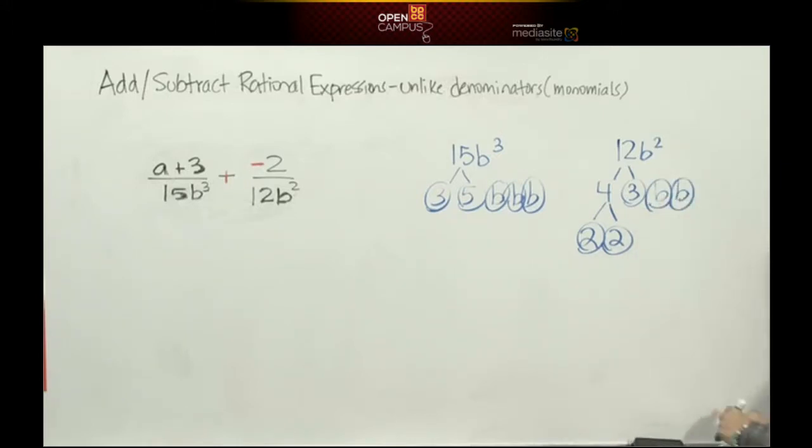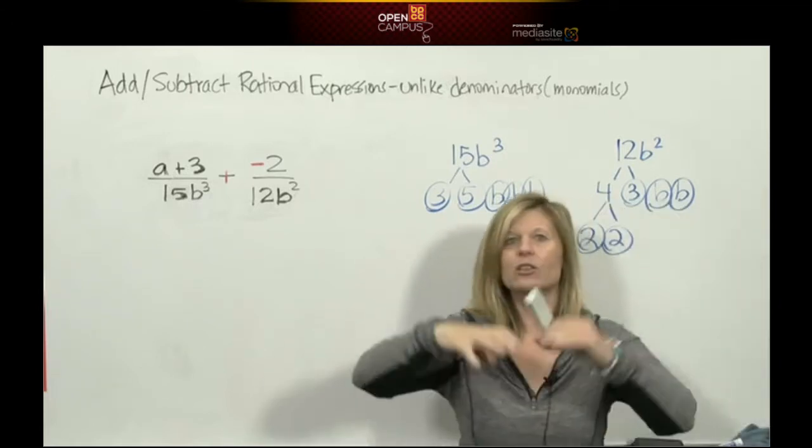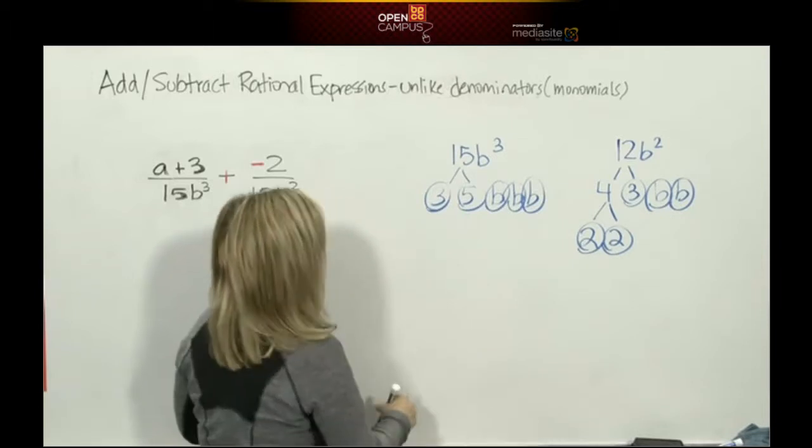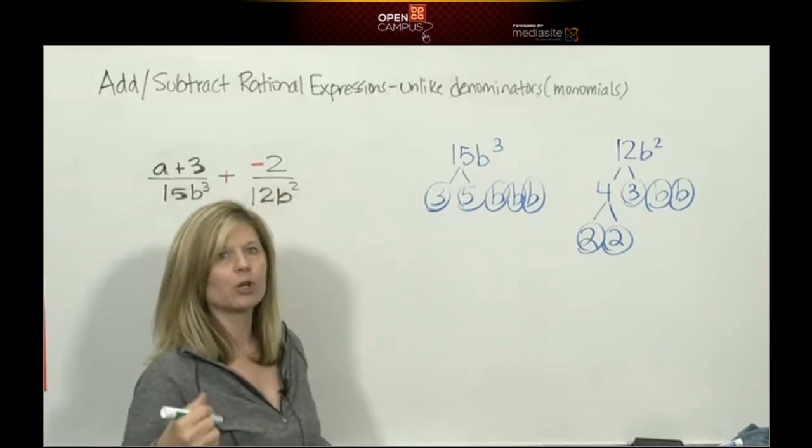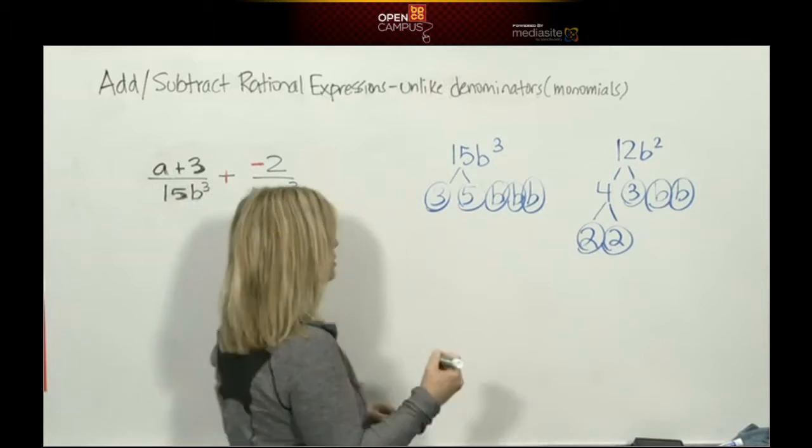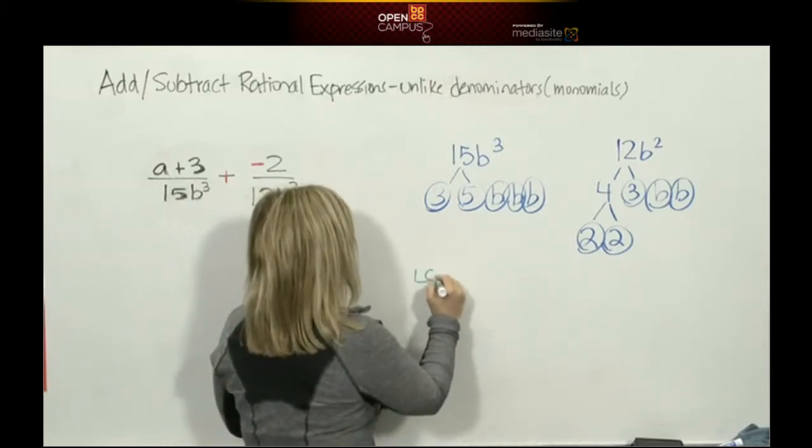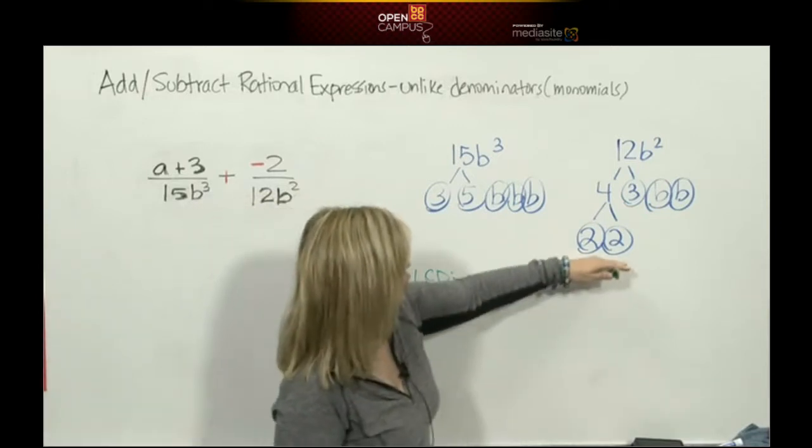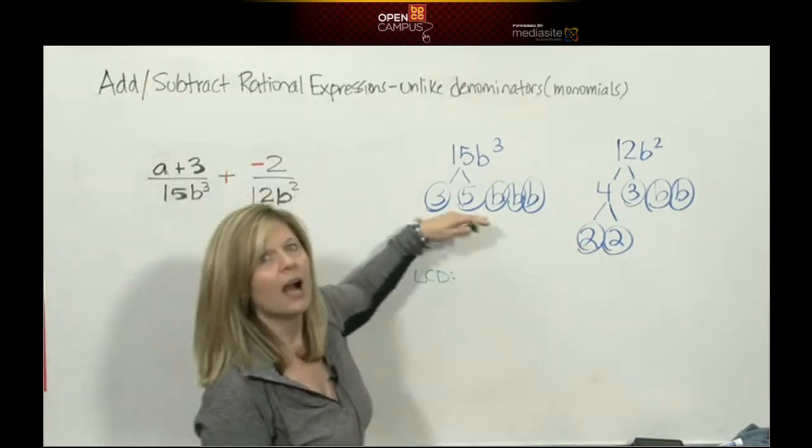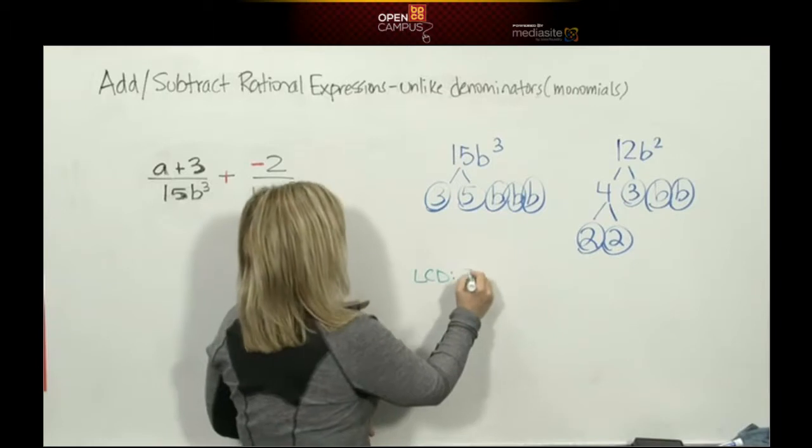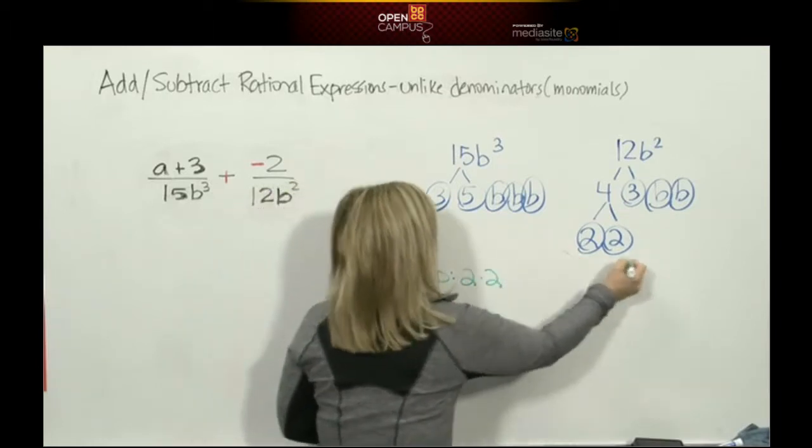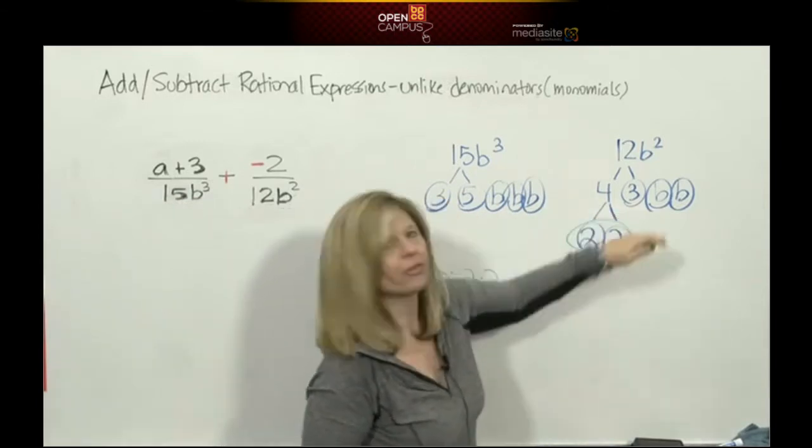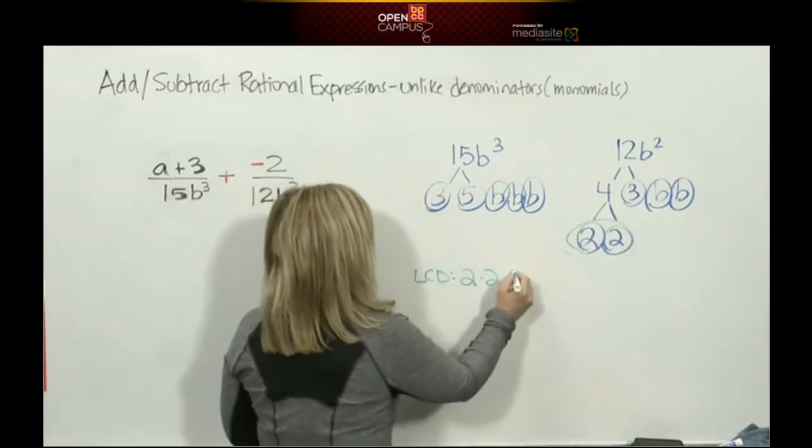Now to get my least common denominator, I take the most of every different prime term. Remember it could be numbers, variables, or parentheses. We have no parentheses so we're looking at numbers and variables. The smallest number is 2. I have two 2's here, no 2's here, so I have to take the most, two 2's. For 3's, 1 and 1, so I just need 1. One 5, no 5's, I have to take the most, I'll take my 5.